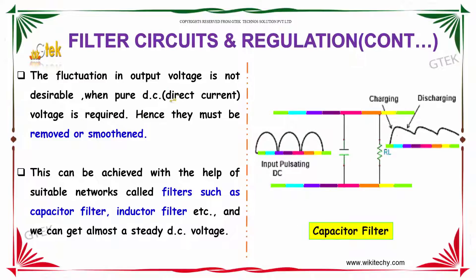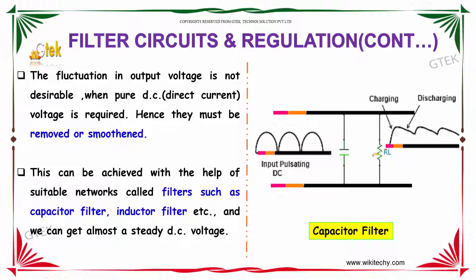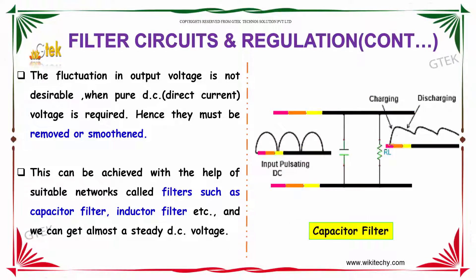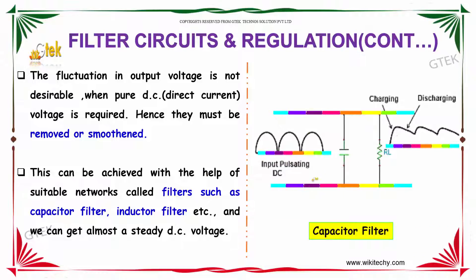The fluctuation in output voltage is not desirable where pure DC voltage is required, hence they must be removed or smoothened. This can be achieved with the help of suitable networks called filters, such as capacitor filters and inductor filters, and we will be getting almost a steady DC voltage.